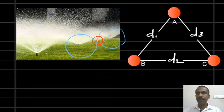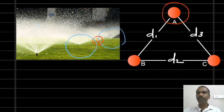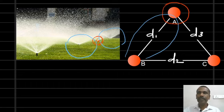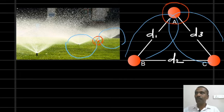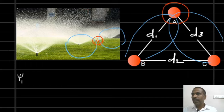We consider conductor A. This conductor produces certain magnetic flux lines here, and this conductor will get certain flux lines from conductor B and certain flux lines from conductor C. So in effect, conductor A gets magnetic flux lines due to its own current, plus certain flux lines from conductor B and certain flux lines from conductor C. So what is the total flux linkage of conductor A?